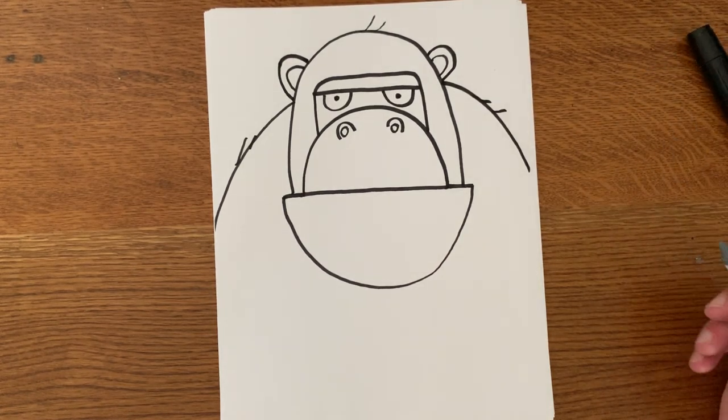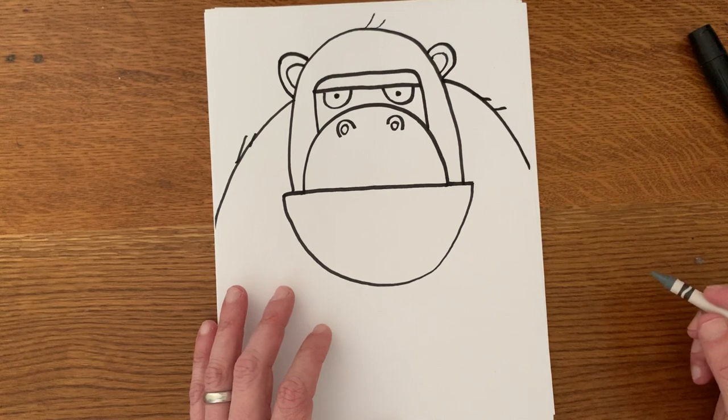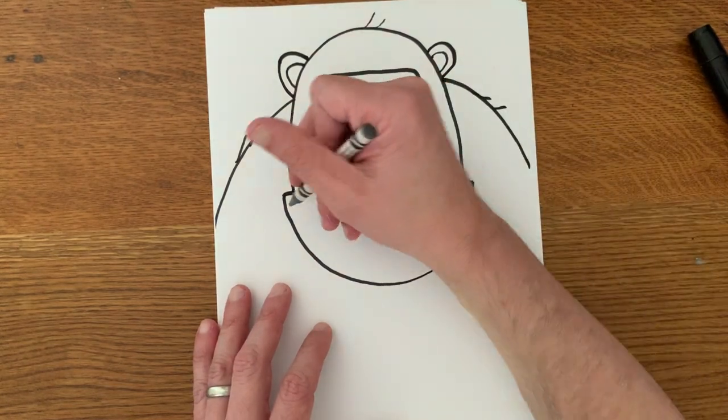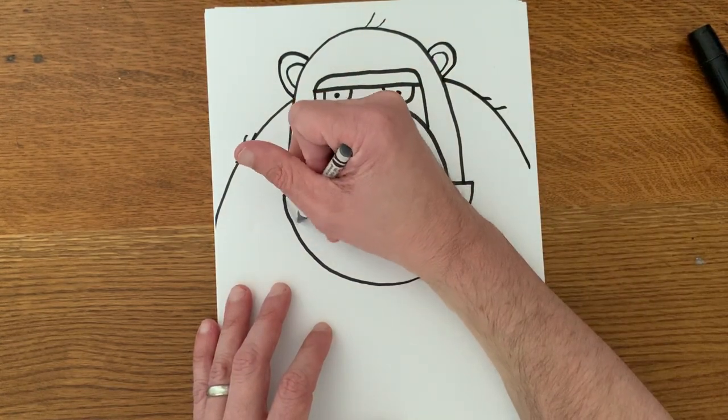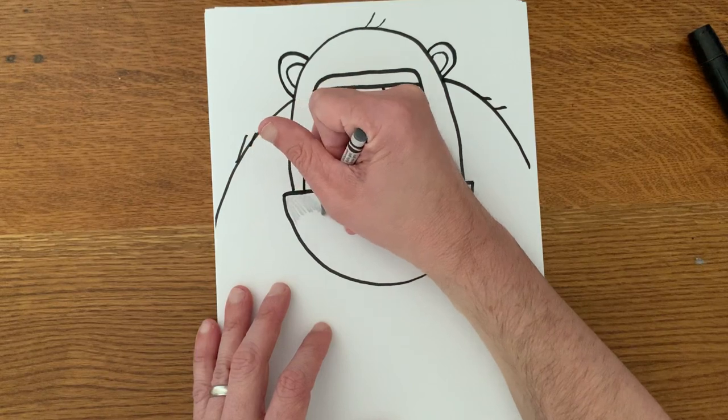Now I'm going to color everything black except for the facial features, which have skin on them. So they're going to be gray. So I'm going to go ahead and color those first.